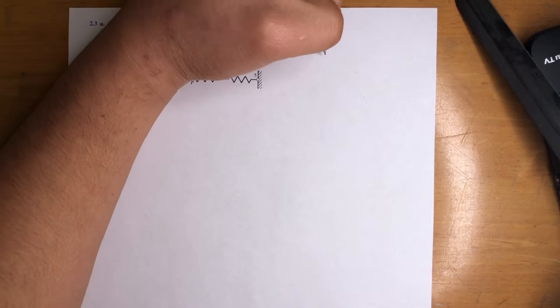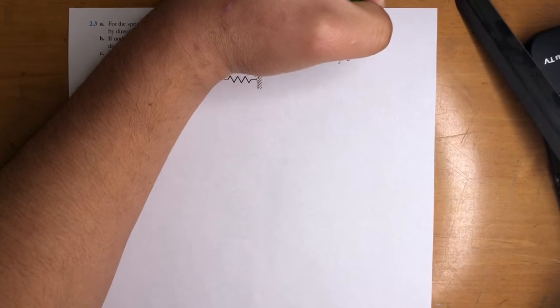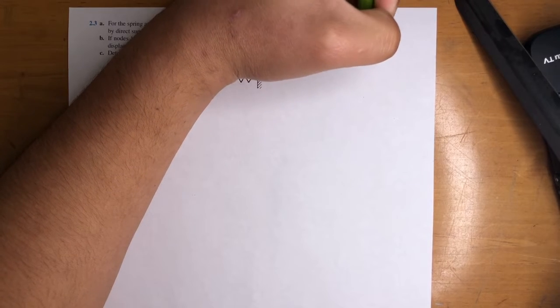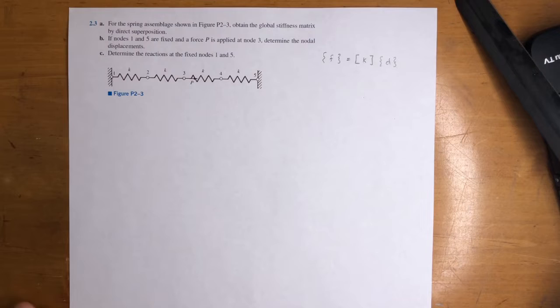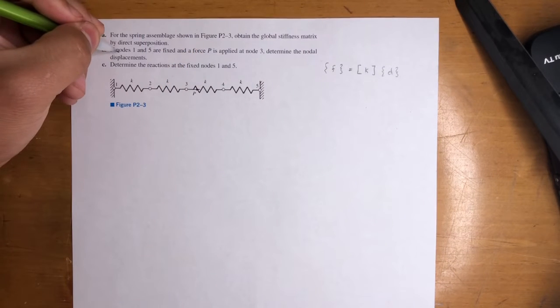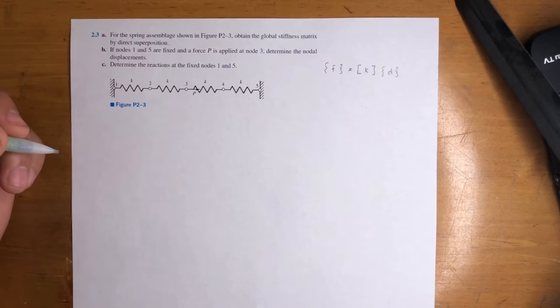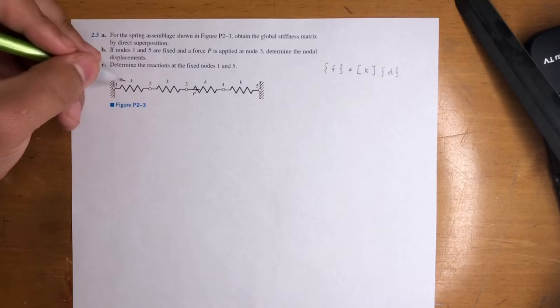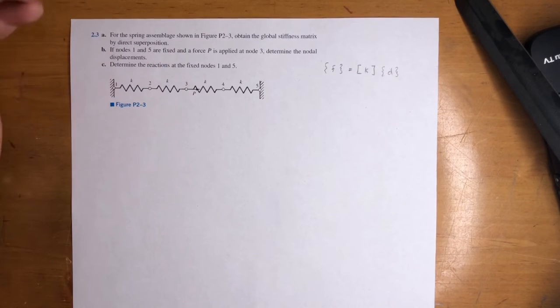Alright, so again, this is our main goal. It's the force vector equals the global stiffness matrix times the displacement vector. Now we got to get the global stiffness matrix, obviously. Then we get the nodes displacements and then the reactions at the nodes. So this one's also in terms of variables, but all the Ks are equal and then there's only one P. So it's going to be a little easier than the first problem.